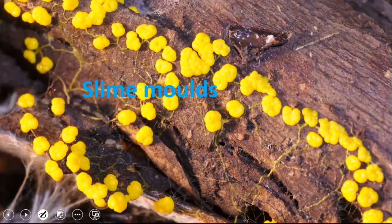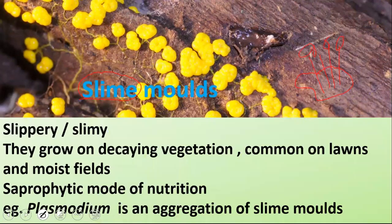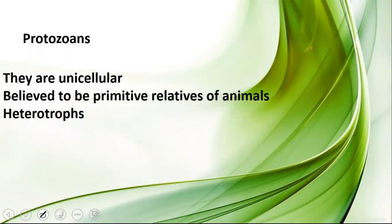Slime molds have a body structure called a plasmodium, and on top of this plasmodium grow different fruiting bodies. They are slimy — hence the name slime molds. They grow on decaying vegetation and are commonly found on lawns and moist fields. Their mode of nutrition is saprophytic, meaning they feed on dead and decaying organisms. Plasmodium is an aggregation of slime molds.